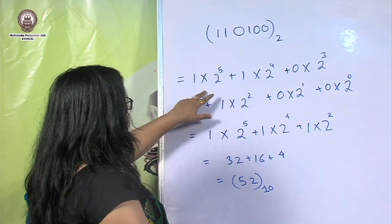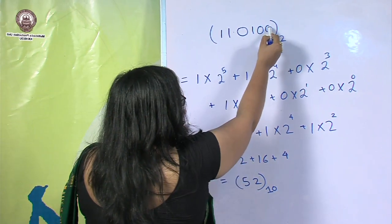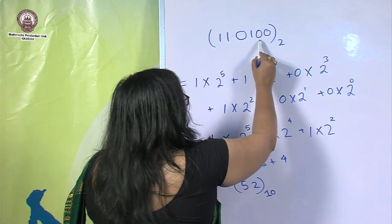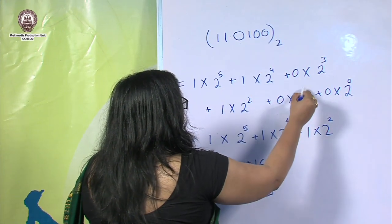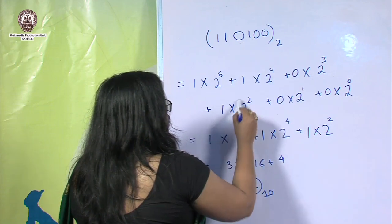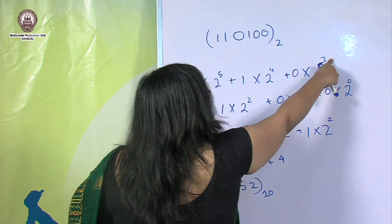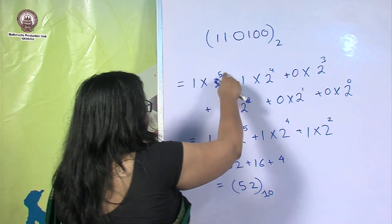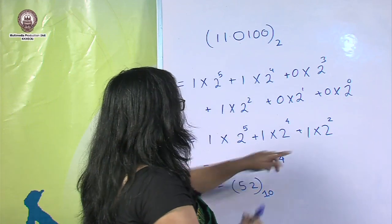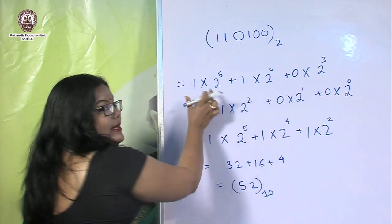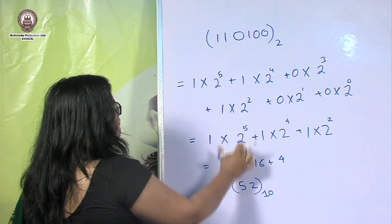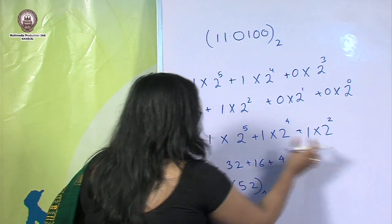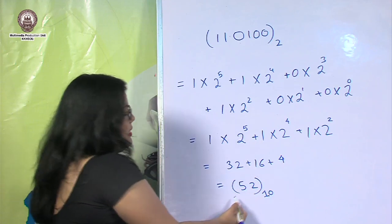We break up each bit and assign its weight. The rightmost 0 is at position 0, so 0×2⁰. The next 0 is 0×2¹. The 1 is 1×2², the 0 is 0×2³, the next 1 is 1×2⁴, and the last 1 is 1×2⁵. Since the 0s contribute nothing, we only consider the 1s: 1×2⁵ + 1×2⁴ + 1×2² = 32 + 16 + 4 = 52.